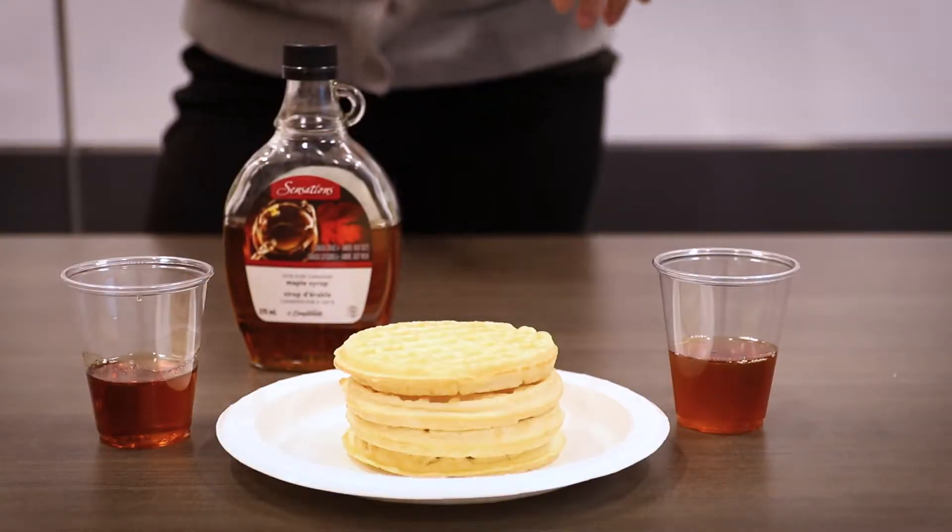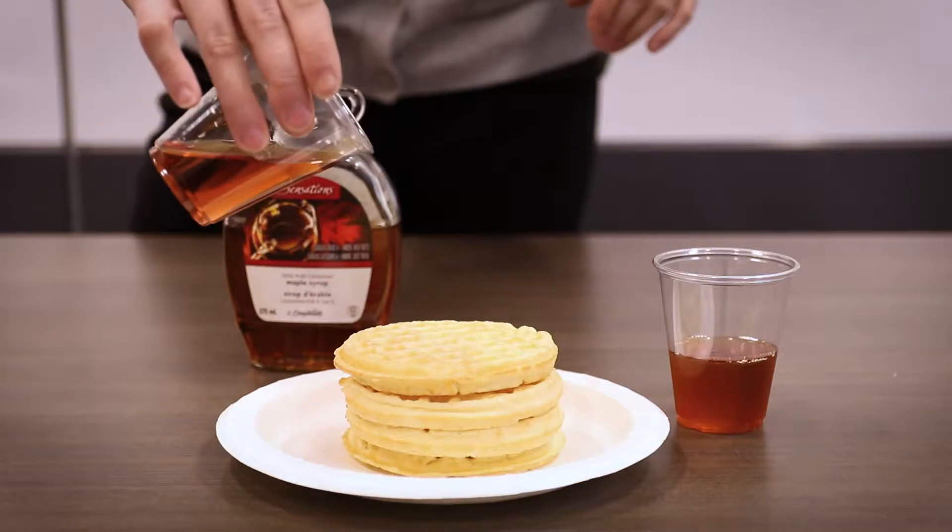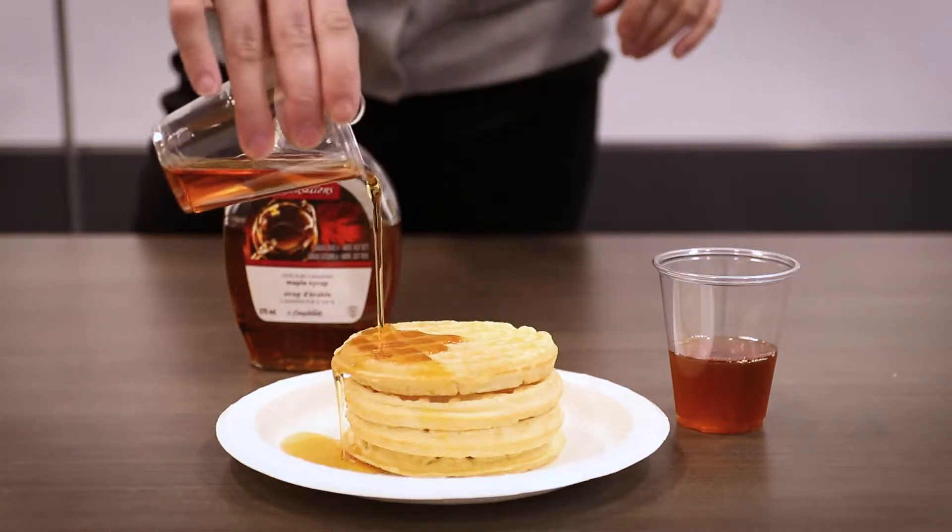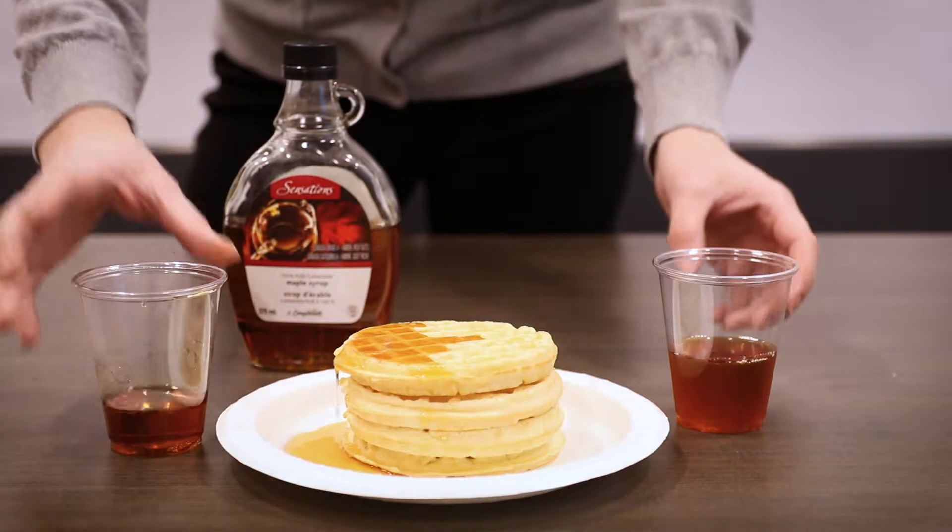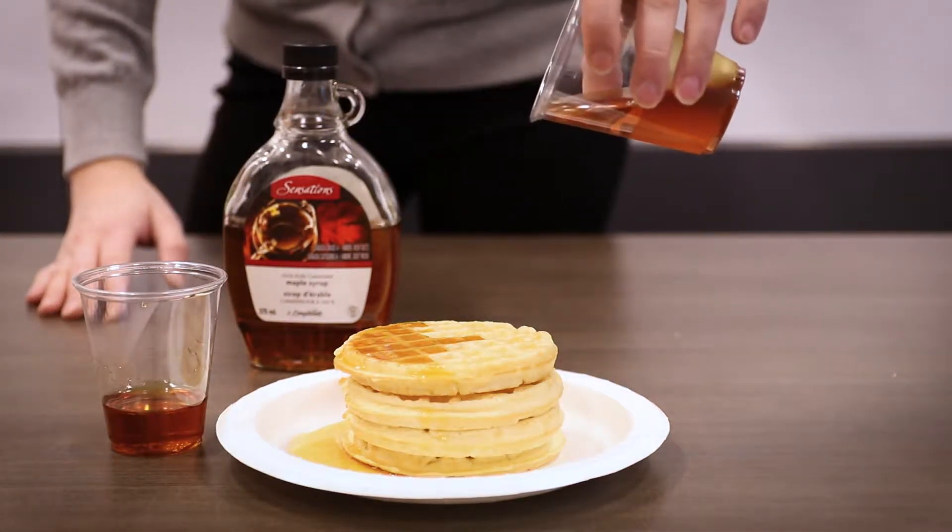So when you have an oil with a low viscosity, like a 5 or a 10, it's going to run really, really thin. And when you have an oil that has a higher viscosity, maybe a 30 or higher, it's going to run really, really thick.